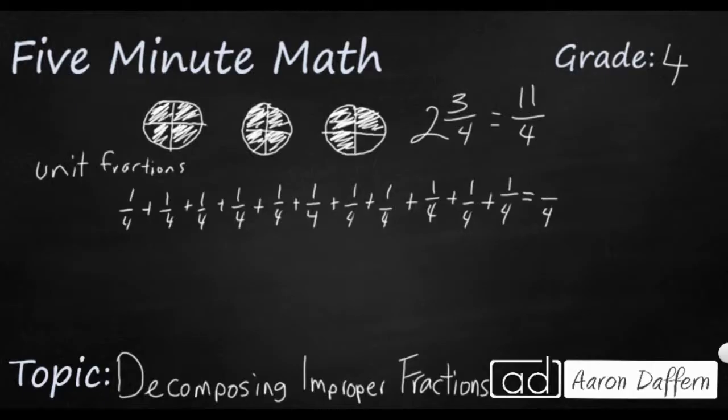Because I'm just adding 1 fourth, 1 fourth, 1 fourth. I'm not making these 8ths and 12ths and 16ths. What you do add are the numerators. So this is one way that I can show this as a sum of the unit fractions. But how else can I do this?